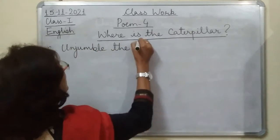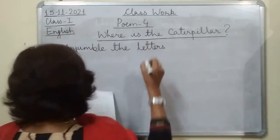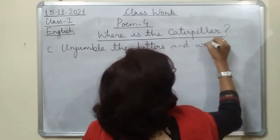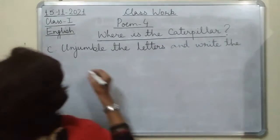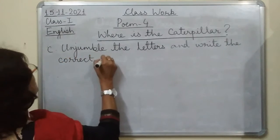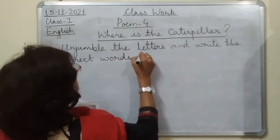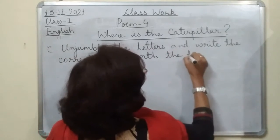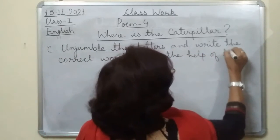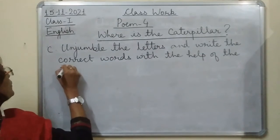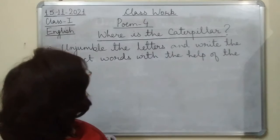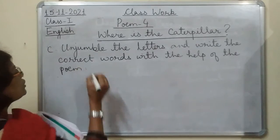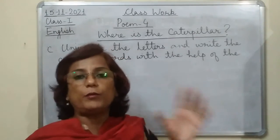Now I will be doing the third exercise, that is exercise C: 'Unjumble the letters and write the correct words with the help of the poem.' The words are all jumbled up, so you have to first unjumble them — that means write the letters in the correct position. If the letters are not written at the proper place, it becomes a wrong word.